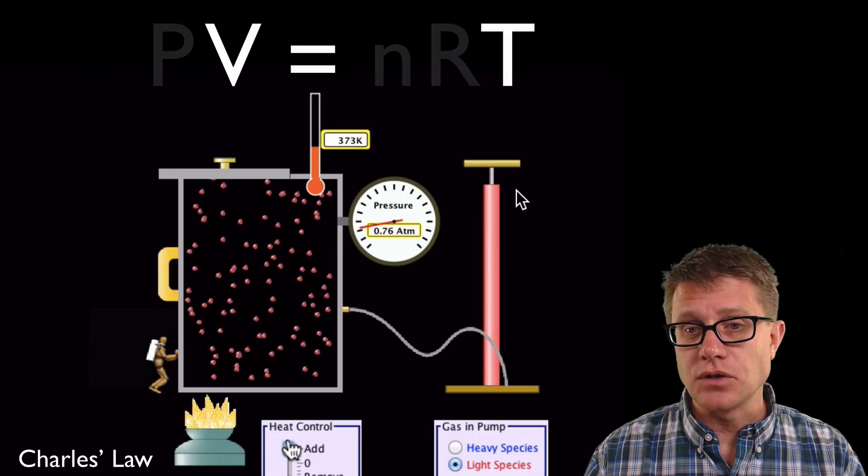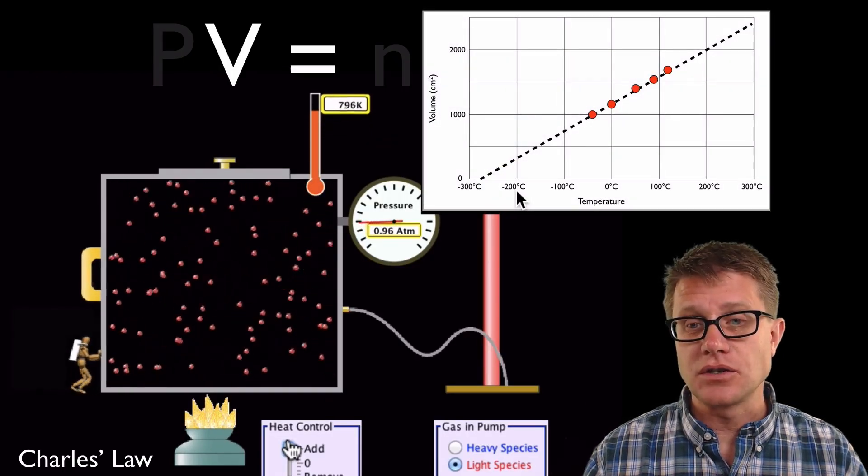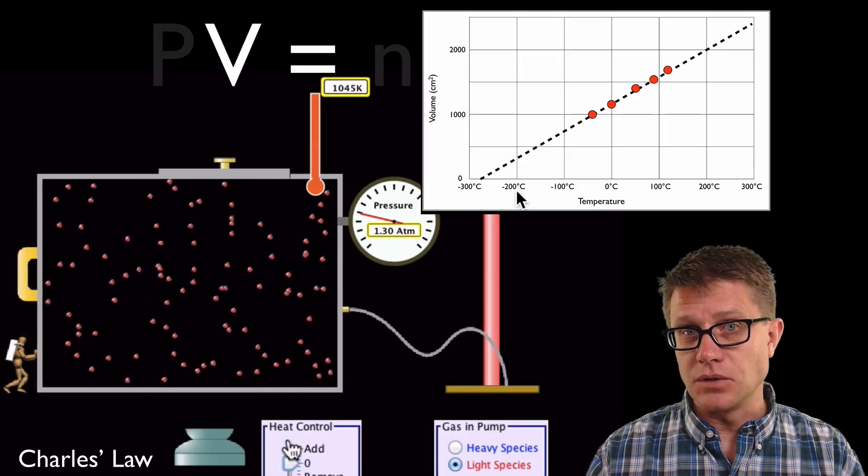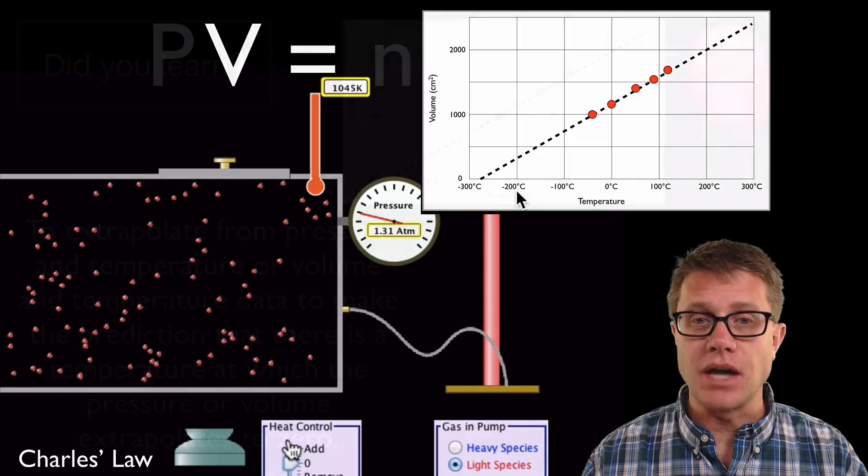Now this is a direct relationship. So if we were to graph this, that is that absolute value calculation I showed you just a second ago. As we increase temperature, bigger volume. Decrease temperature, lower volume. If we play this out and extrapolate it, absolute zero.